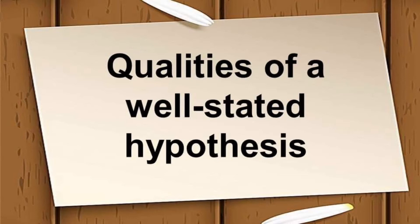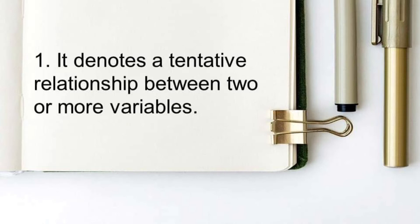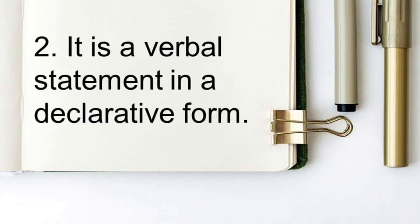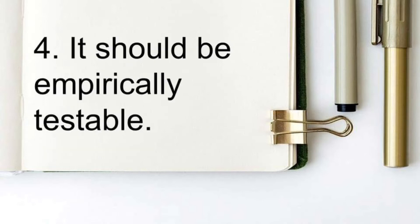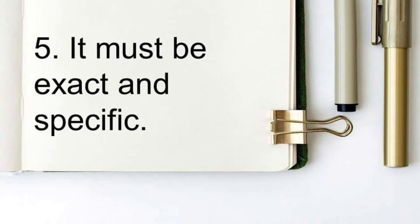Let's look at the qualities of a well-stated hypothesis. First, it denotes a tentative relationship between two or more variables. It is a verbal statement in declarative form — never asked as a question. It is generated from the statement of the problem, meaning your hypothesis must be in line with the study topic. Whether correct or incorrect, it should be empirically testable. It must be exact and specific, and stated as simply as possible so that all parties involved may understand it.